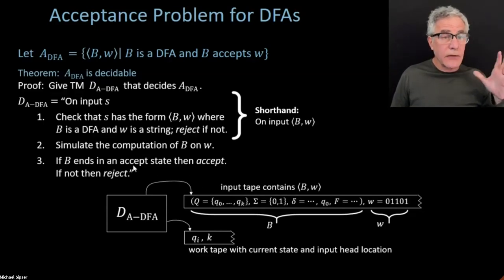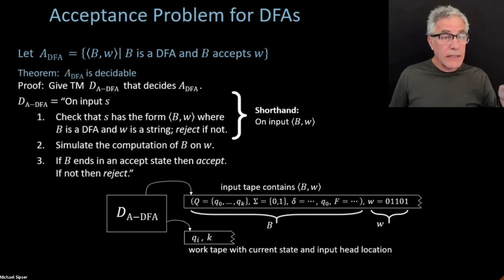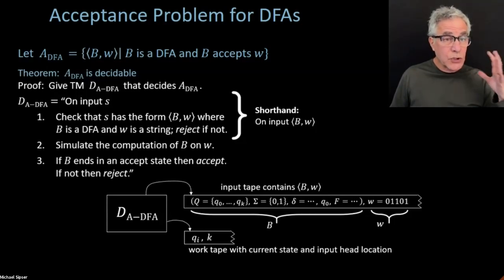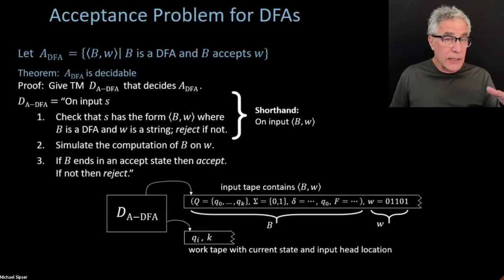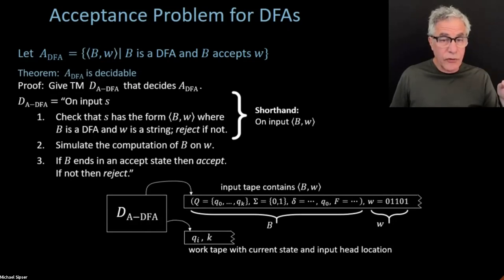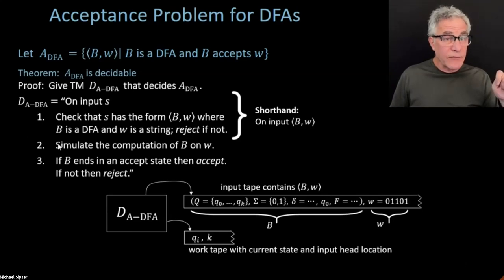Have we verified that D is a decider? Yes. D is never going to get into a loop — there's never any reason for DADFA to loop. The input head location refers to where we are on string W. Someone asked: is this the level of detail for the homework? Yes, that's all I'm looking for.